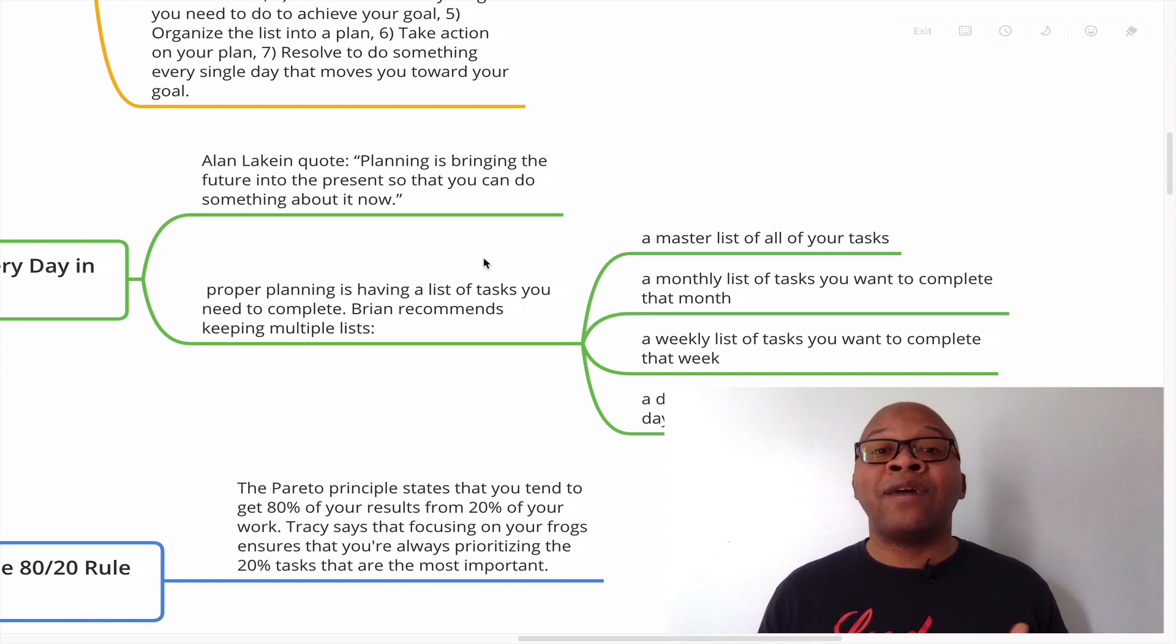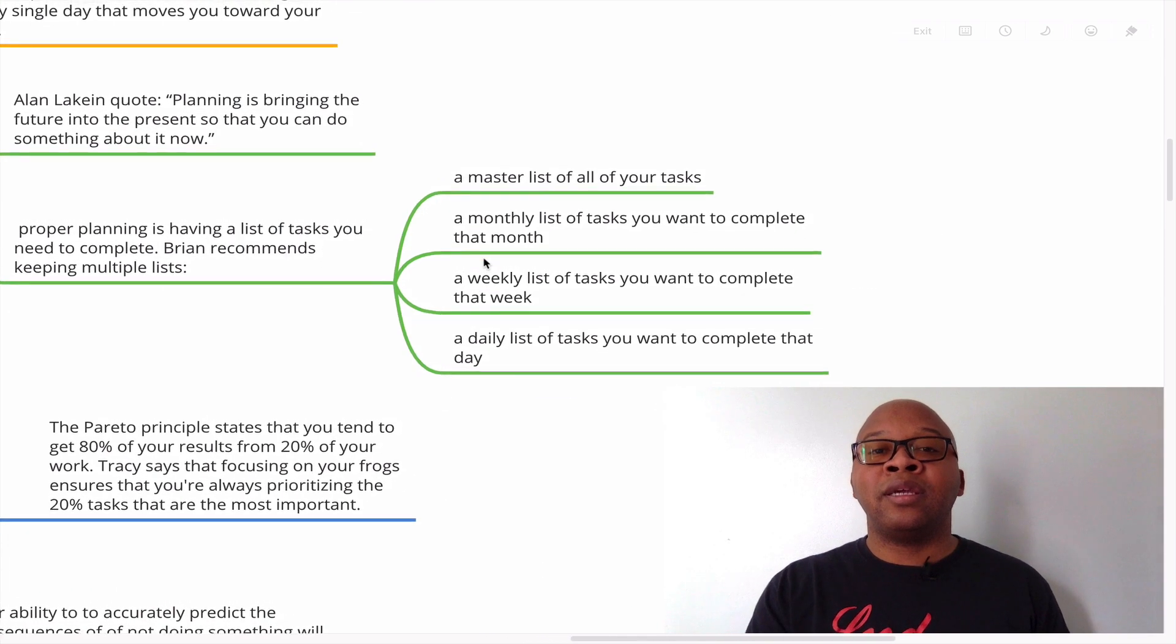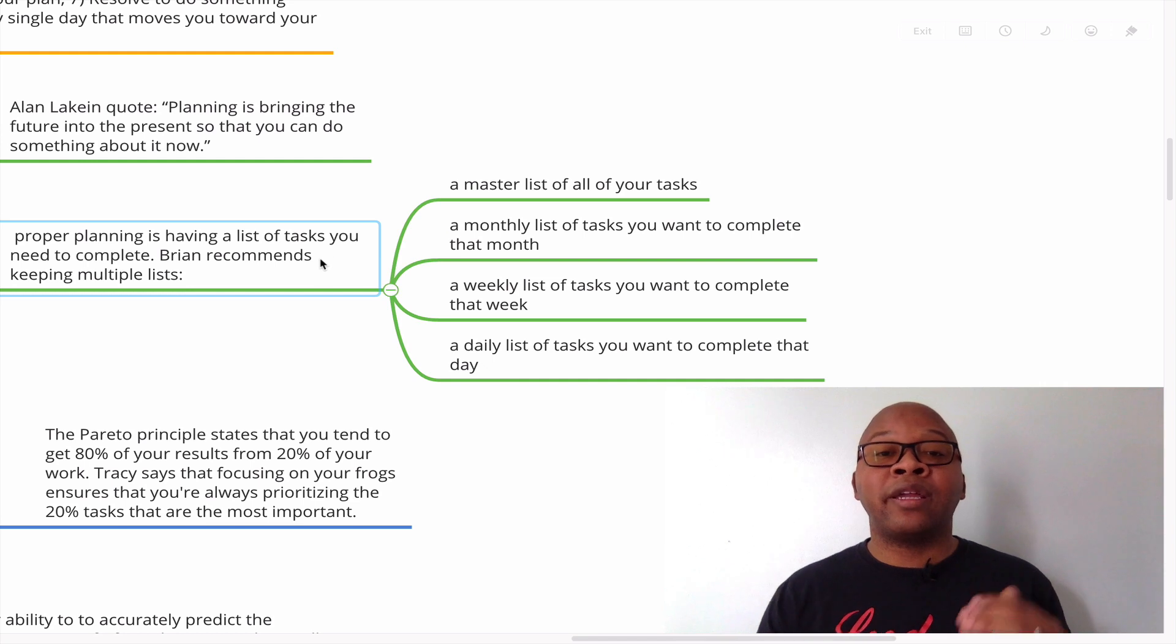In fact, he says you need to have a master list of all of your tasks, of everything that you need to get done. And then he says you break it down to a monthly list of tasks that you want to complete that month, a weekly list of tasks you want to complete that week, a daily list of tasks you want to complete that day. So the key is to have a list. Don't ever work without having a list. So before you start your day, you want to make sure you have a list of tasks that you will work on getting done that day.